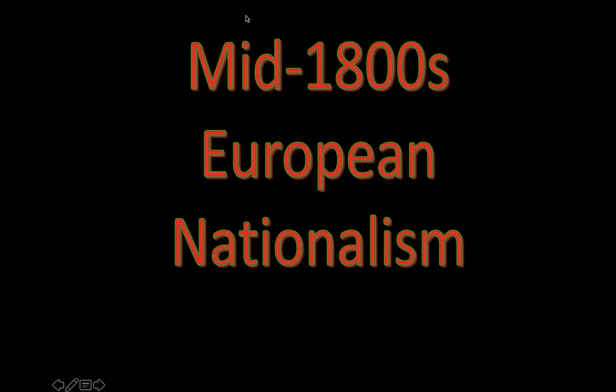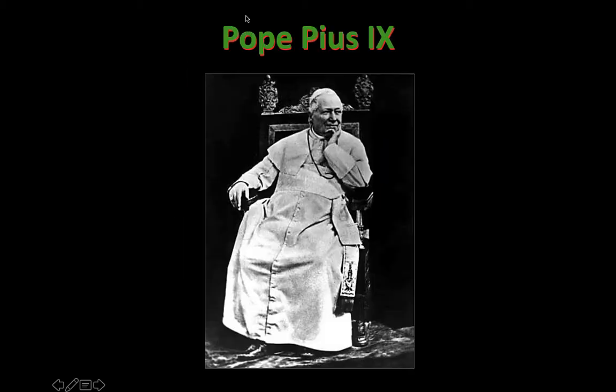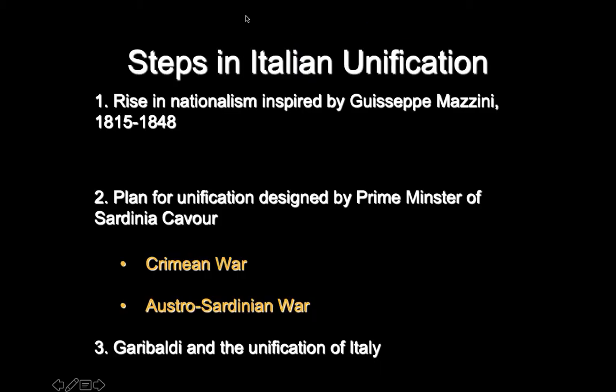Italy formed because of the surge of European nationalism in the mid-1800s. The Catholic Church was not supportive of a unified Italian state unless the Catholic Church was in charge of it. Church powers had declined since about 1648, so they would not be able to unify the Italian state.